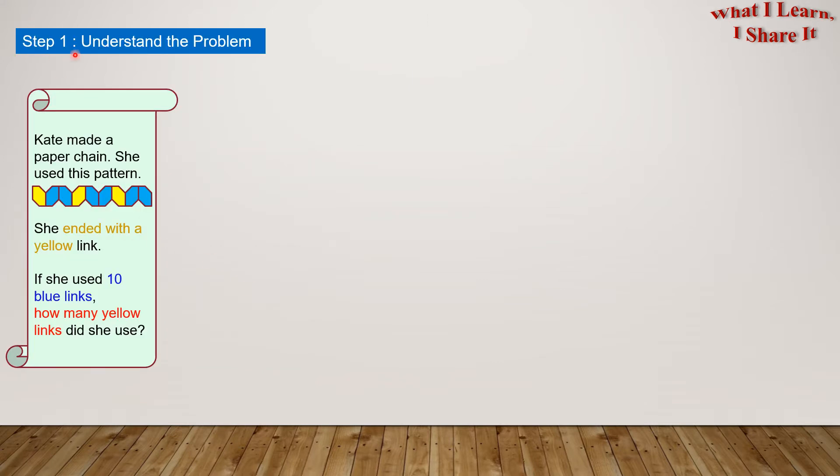Step one: Understand the problem. So what are we given? We are given that Kate made a paper chain. She used this pattern. She ended with a yellow link, and she used 10 blue links. So in our own words, we can write that Kate made a paper chain using some pattern. The pattern ends in a yellow color. 10 blue links are used.